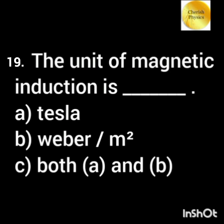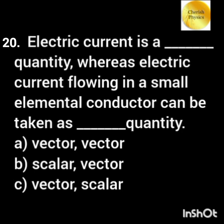The unit of magnetic induction is dash. Electric current is a dash quantity, whereas electric current flowing in a small elemental conductor can be taken as a dash quantity.